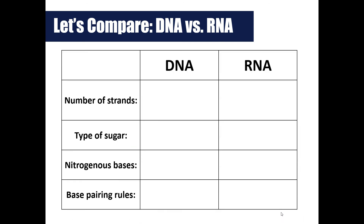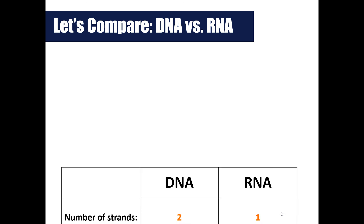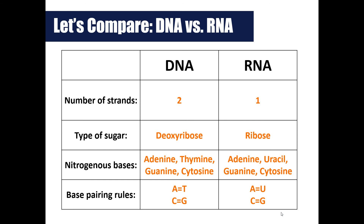Pause the video and fill out the chart comparing DNA and RNA, then come back for the answer. DNA contains two strands; RNA contains one strand. The sugars are different: DNA has deoxyribose, RNA has ribose. There are four nitrogenous bases in both, but DNA contains adenine, thymine, guanine, and cytosine, whereas RNA contains adenine, guanine, cytosine, and uracil. Base pairing rules are similar except thymine is replaced by uracil in RNA — adenine pairs with thymine in DNA, but adenine pairs with uracil in RNA, and cytosine always pairs with guanine in both.